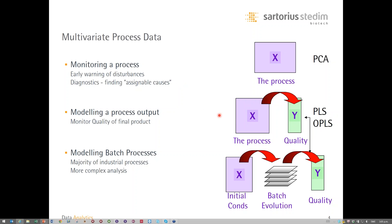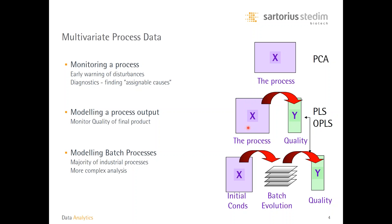When you also have process outputs available — such as quality, yield, or throughput — you move to a higher ambition level: the regression problem. You want to find information in the process inputs that is predictive of the outputs. Extensions of PCA are used here: Partial Least Squares (PLS) was the standard until about ten years ago, and more recently Orthogonal PLS (OPLS) has become preferred due to the clarity and transparency it provides for model interpretation.